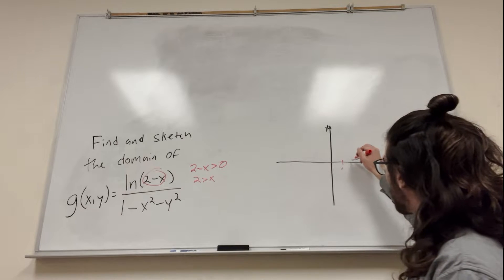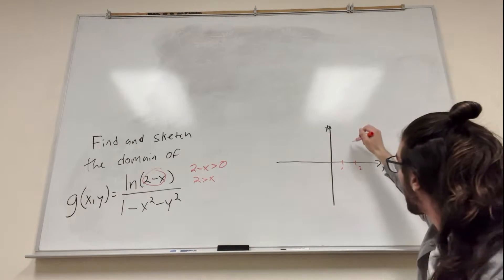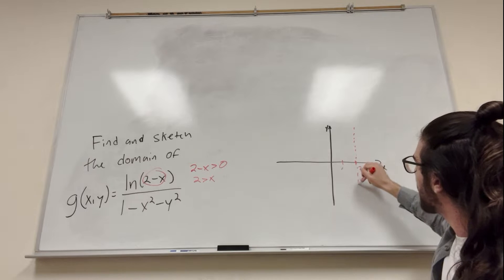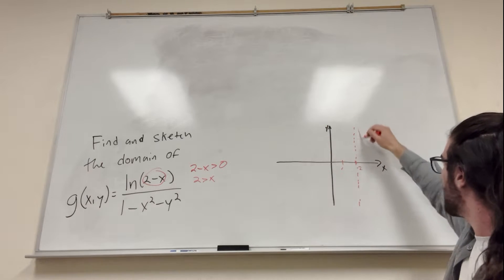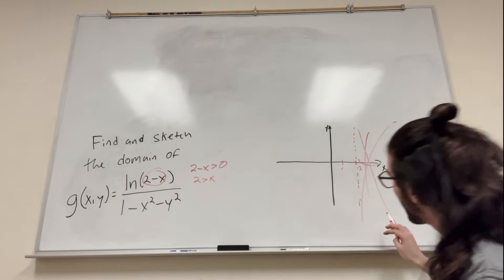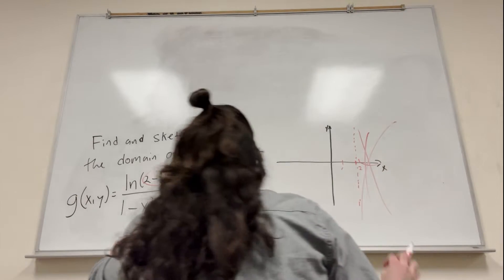So here's 1, here's 2. And because it's not equal to, it has to be a dotted line like this, and x has to be less than 2, so it's going to be on this side. So it cannot be over here, no matter what, it cannot be on that side. That's just non-existent. You don't worry about that anymore.